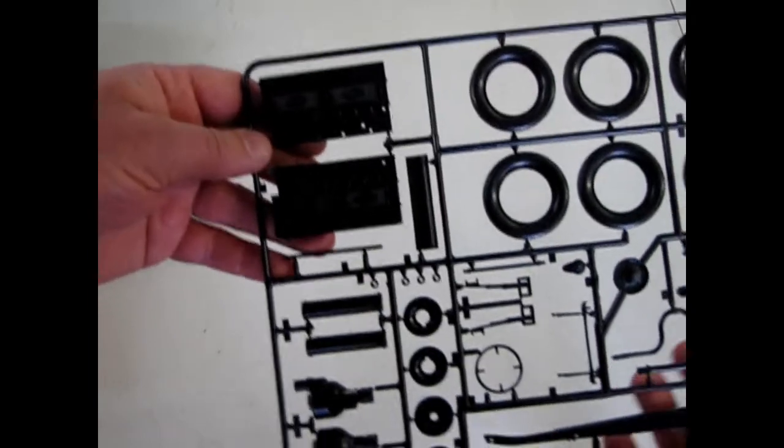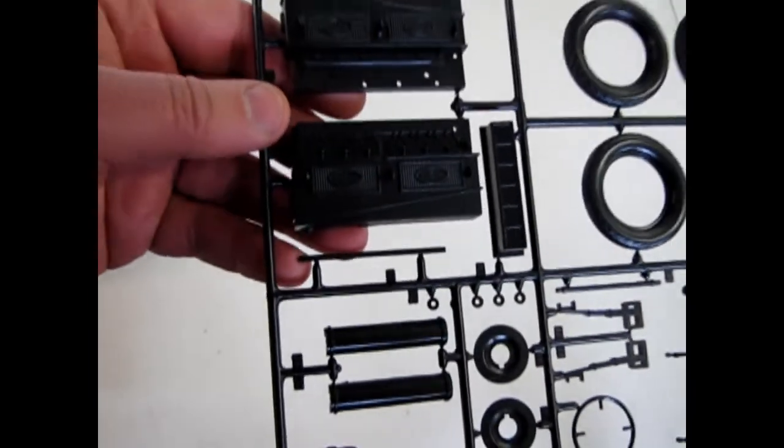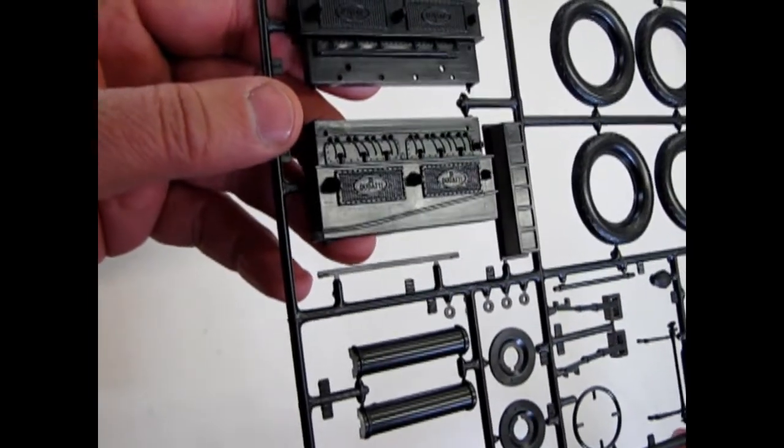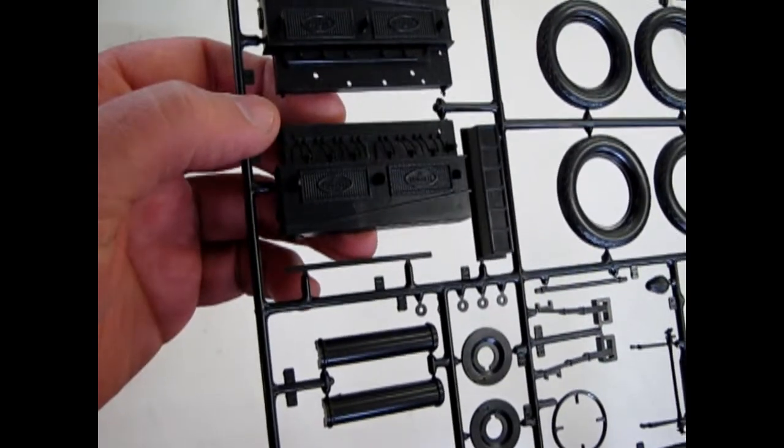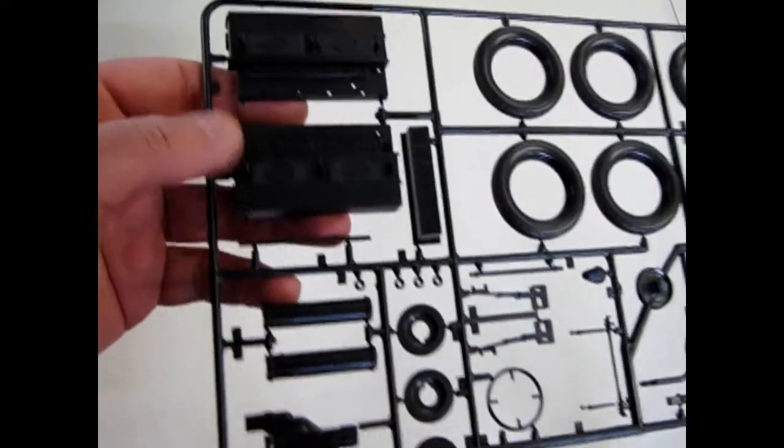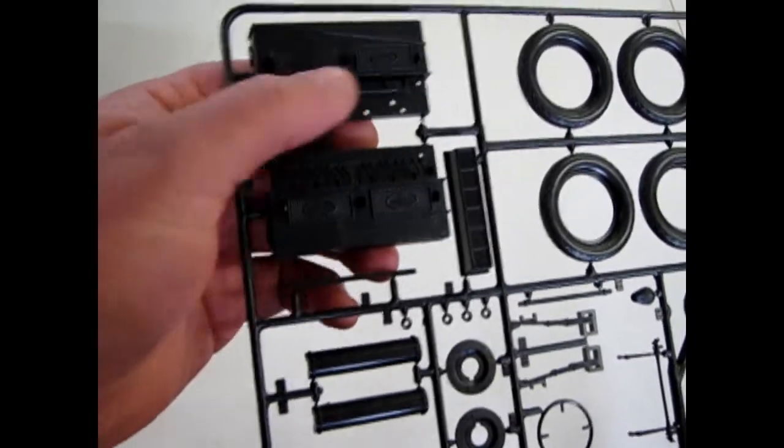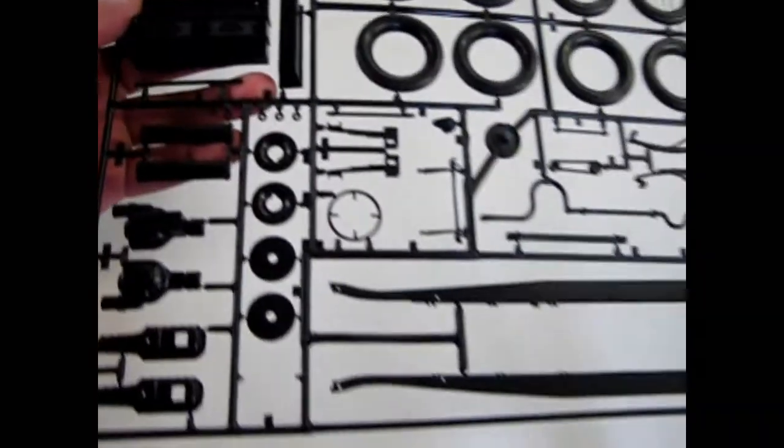And look at that engine block. That's massive. Nice detailing on it. There. You can see the Bugatti metal pieces. The name plates. You know it's a Bugatti because they tell you four times on this engine block. Just so that there's no mistake.